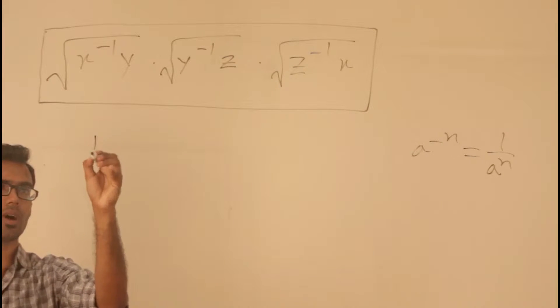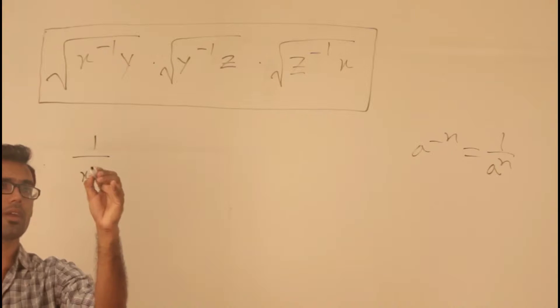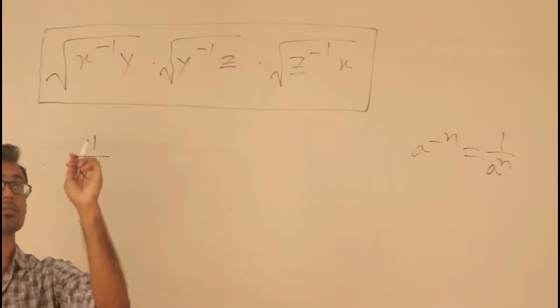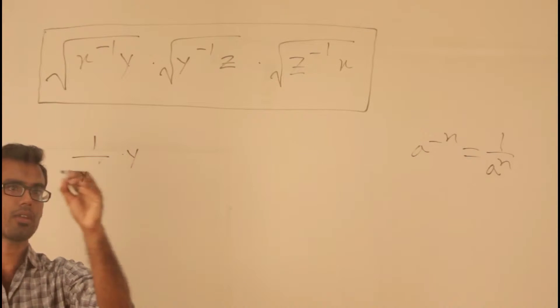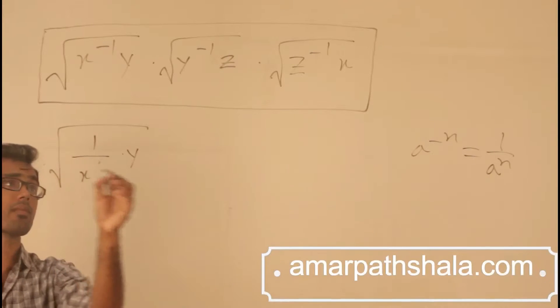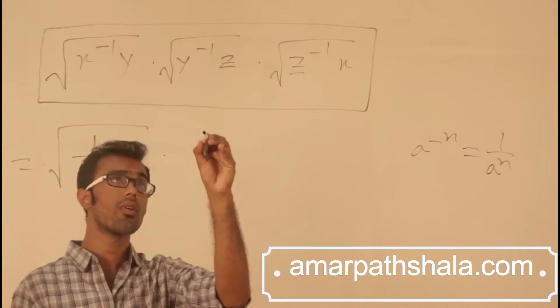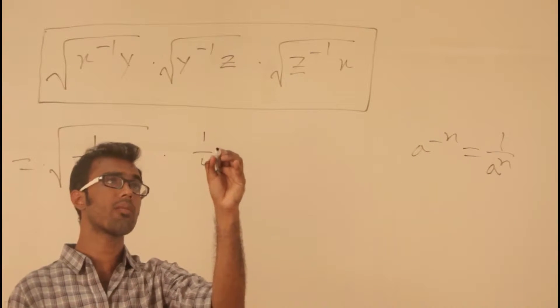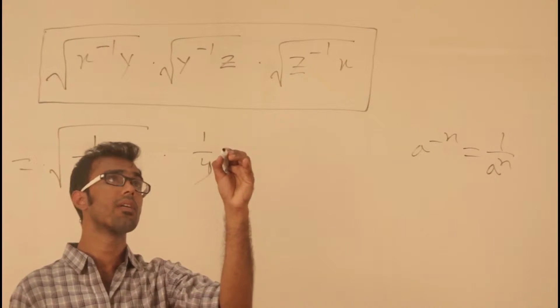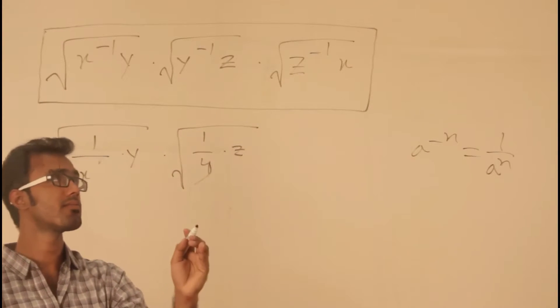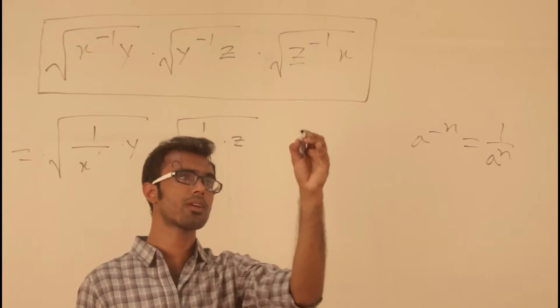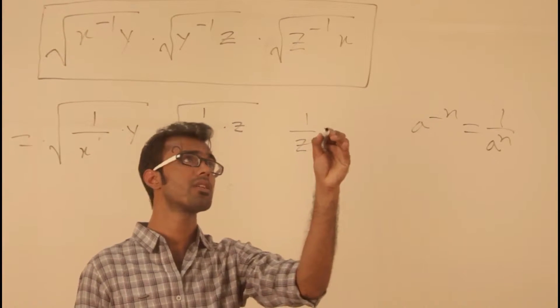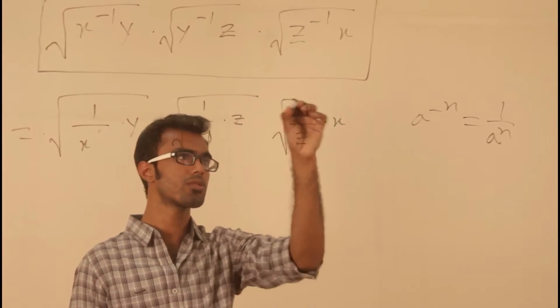X to the power minus 1, that is, 1 to the power 1/x, which means x into y root over, into 1 divided by y. Similarly, x into z root over z to the power minus 1, which is 1 divided by z into x root over.